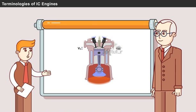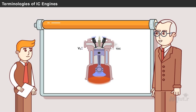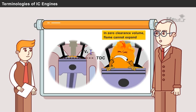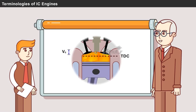But, sir, why can't we move the piston up to the extreme top? That is a good question. Zero clearance volume is not recommended because if it doesn't have a clearance volume, it is difficult for the flame to expand. Hence, the flame needs a minimum space.